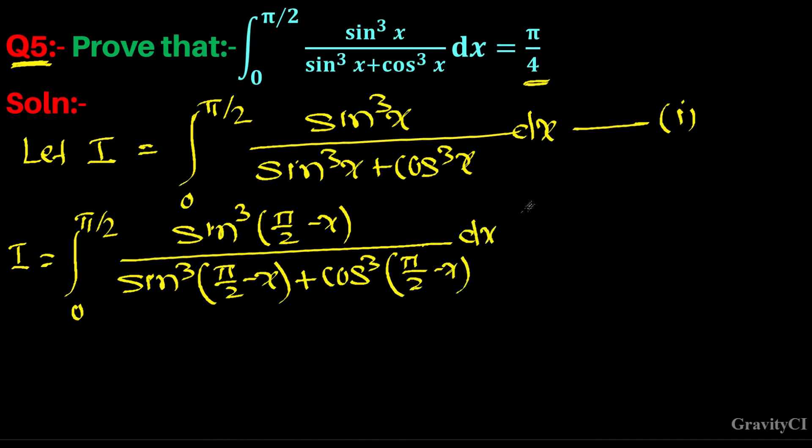Here we have used this property: integral 0 to a of f(x) dx equals integral 0 to a of f(a - x) dx. We have used this property according to this formula.